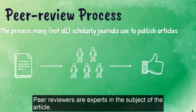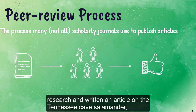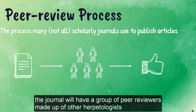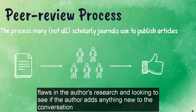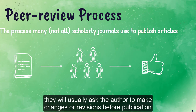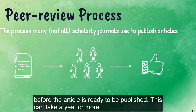Peer reviewers are experts in the subject of the article. For example, if a herpetologist — someone who studies reptiles and amphibians — has completed research and written an article on the Tennessee cave salamander and submits it to the Journal of Herpetology, the journal will have a group of peer reviewers made up of other herpetologists and experts on salamanders to evaluate the article, looking for flaws in the research and looking to see if the author adds anything new to the conversation on Tennessee cave salamanders. If they decide to publish the article, they will usually ask the author to make changes or revisions before publication, and the author and peer reviewers may go back and forth for a while before the article is ready to be published.